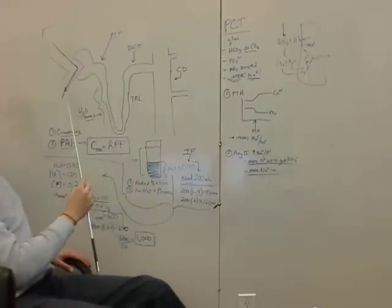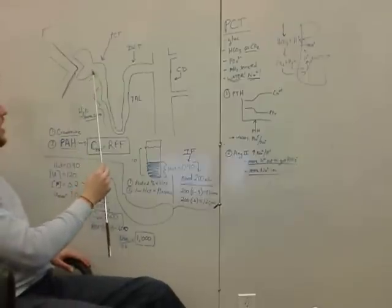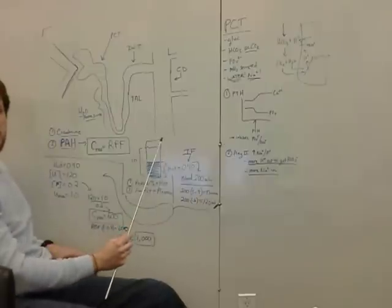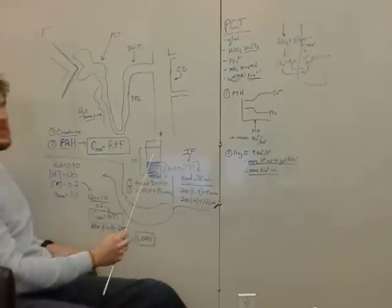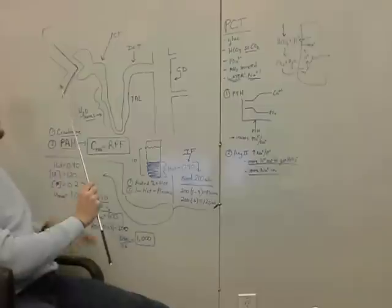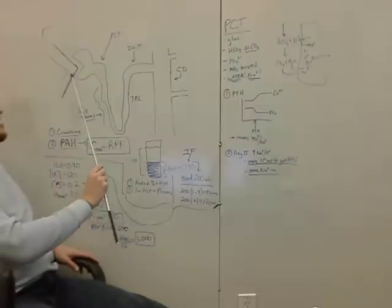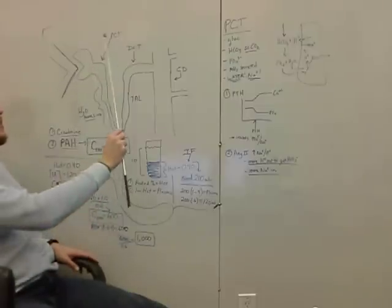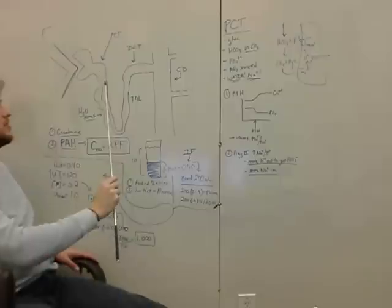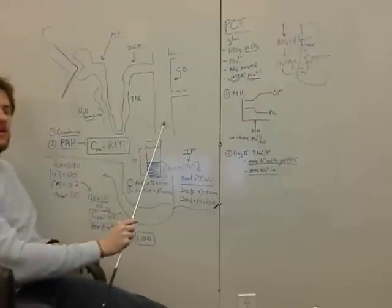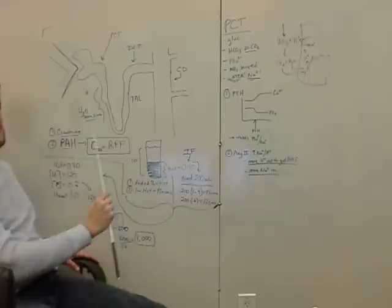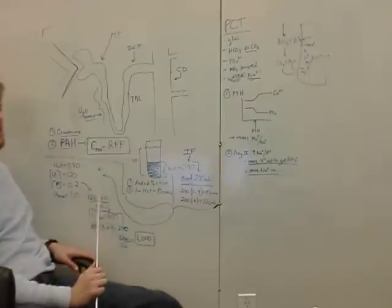With inulin, it's filtered and then just goes to the tubules — so whatever's excreted equals the amount that's filtered. For PAH, it's going to be filtered and then the rest of it, anything that's left, is going to be secreted into the tubules. So whatever we collect represents the plasma volume that's coming by the kidney.